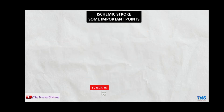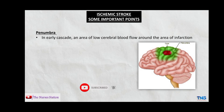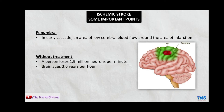Two important points regarding ischemic stroke: first, the penumbra — in early stroke, this is an area of low cerebral blood flow around the area of infarction. This area receives less blood flow and is at risk of infarction but can be saved by proper treatment, reducing the area of infarction. Second, without treatment, a person loses 1.9 million neurons per minute, and the brain ages 3.6 years per hour.